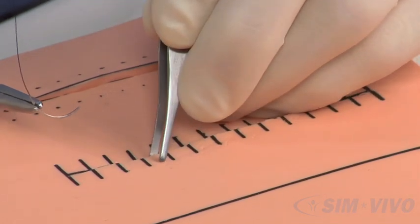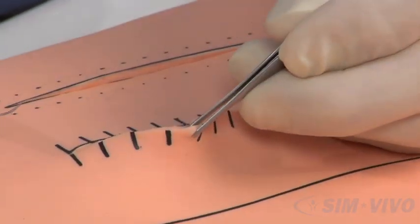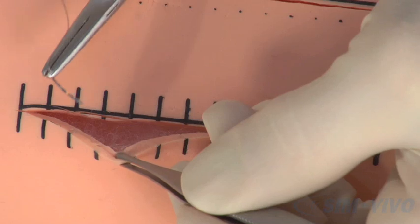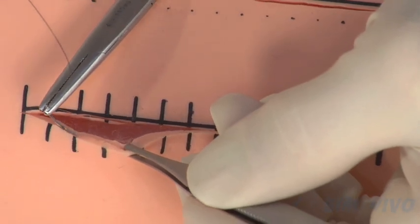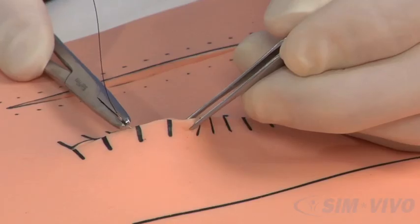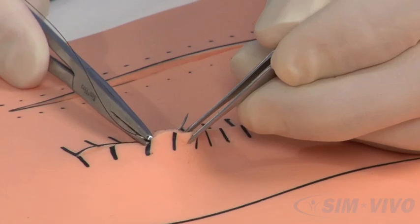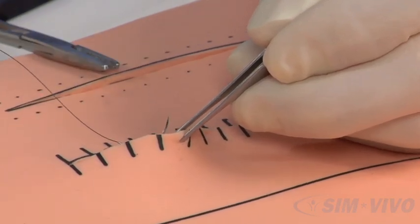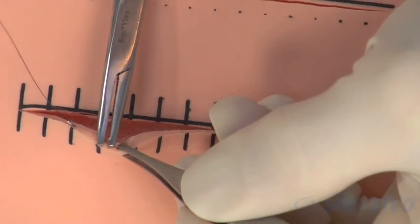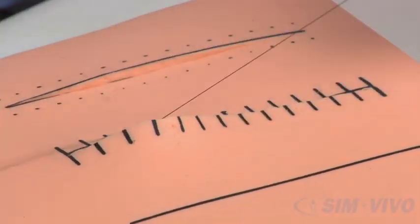Do that by lifting up and away from yourself. Enter at the cross hatch, staying within the width of the skin, and coming out on the next cross hatch. Hold on to the skin and rotate the needle on through the bite.